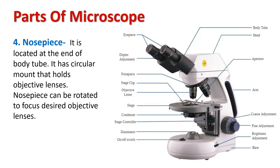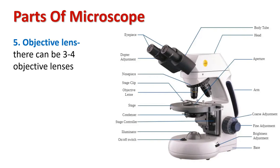The nosepiece is located at the end of the body tube. It has a circular mount that holds the objective lenses. The nosepiece can be rotated so that the desired objective lens can be used or swapped out. It is made up of metal and may have a marking scale to measure the sample.